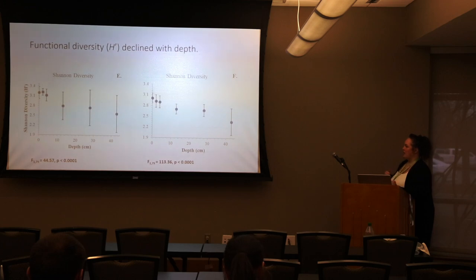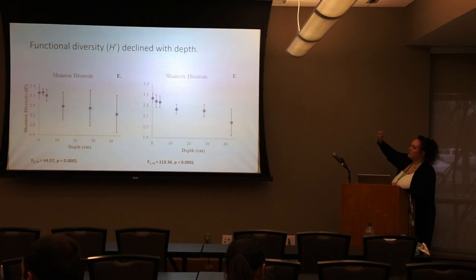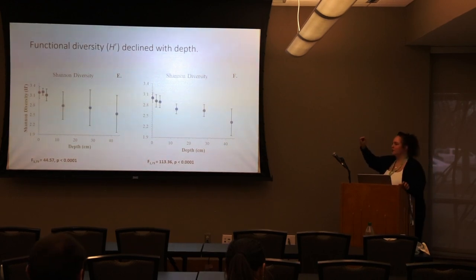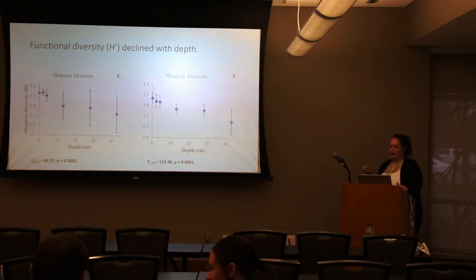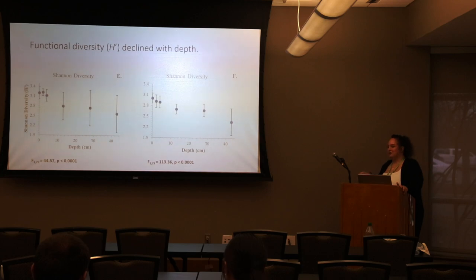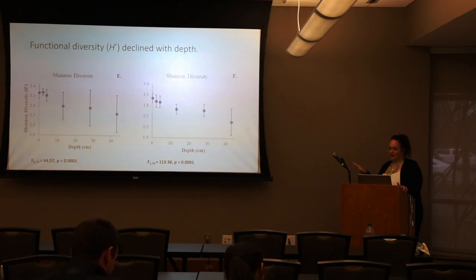The same trend held for functional diversity, which combines richness and evenness. At the soil surface we have a community able to use a more diverse range of carbon sources, and that declines as we move deeper through the soil profile. Unfortunately, with how things played out in the spring, we weren't able to see any impact of our cover crops on these three diversity measures.